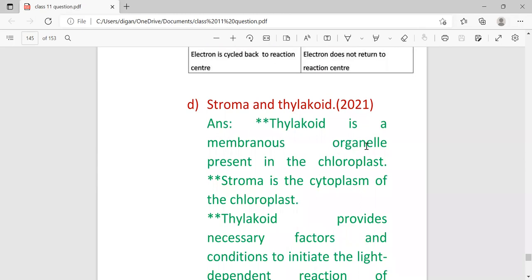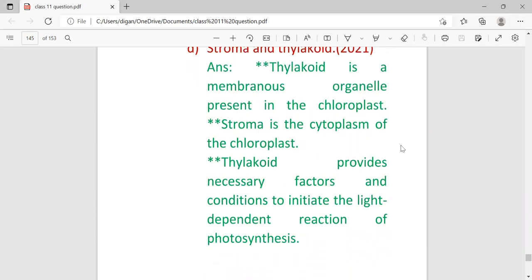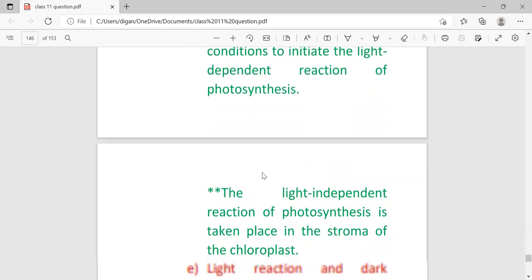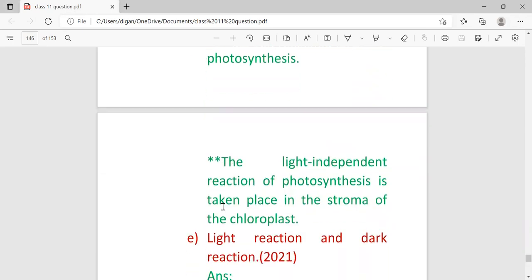Stroma and thylakoid. Thylakoid is a numerous organelle present in the chloroplast, whereas stroma is the cytoplasm of the chloroplast. Thylakoid provides necessary factors and conditions to initiate the light-dependent reaction of photosynthesis. It means in thylakoid, the light reaction takes place. The light-independent reaction of photosynthesis takes place in the stroma of the chloroplast. It means dark reaction takes place in the stroma.